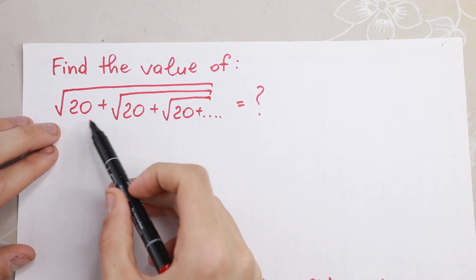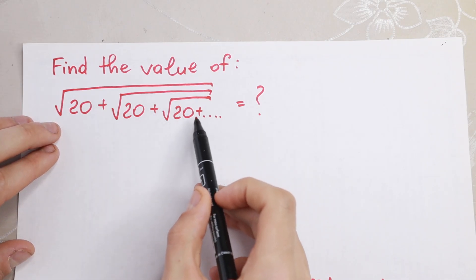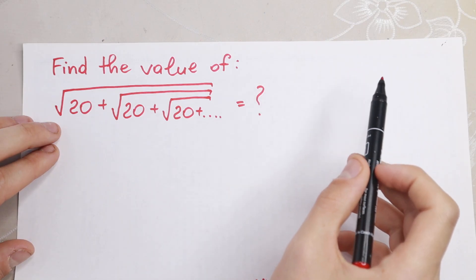We need to find this sum: square root of 20, plus square root of 20, plus square root of 20, and it goes to infinity.